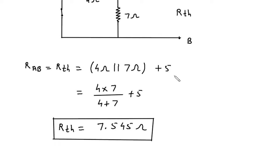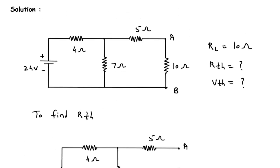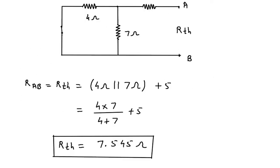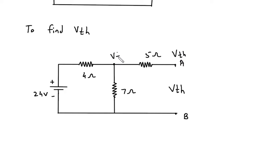Next we have to find VTH. We have to remove RL. Since the circuit is open circuited at terminals A and B, this voltage will be VTH. This open-circuit voltage equals VA, so this voltage will be equal to VTH.